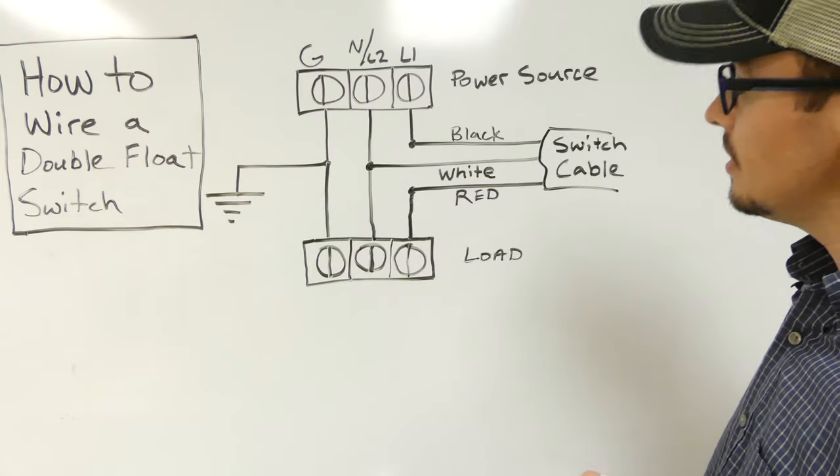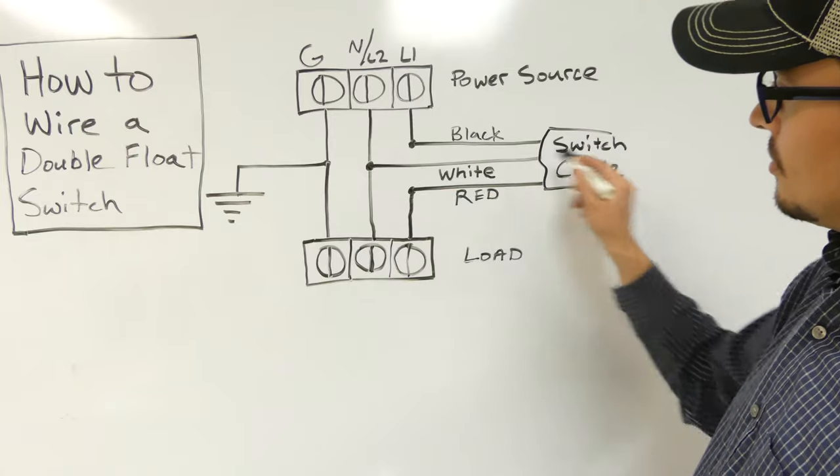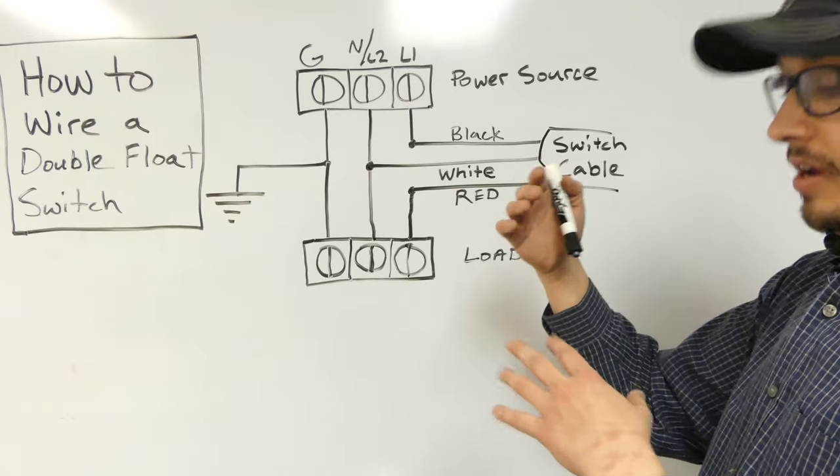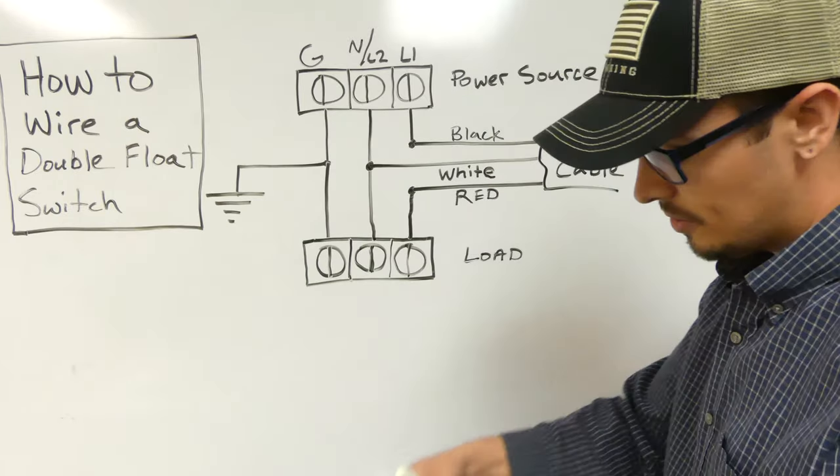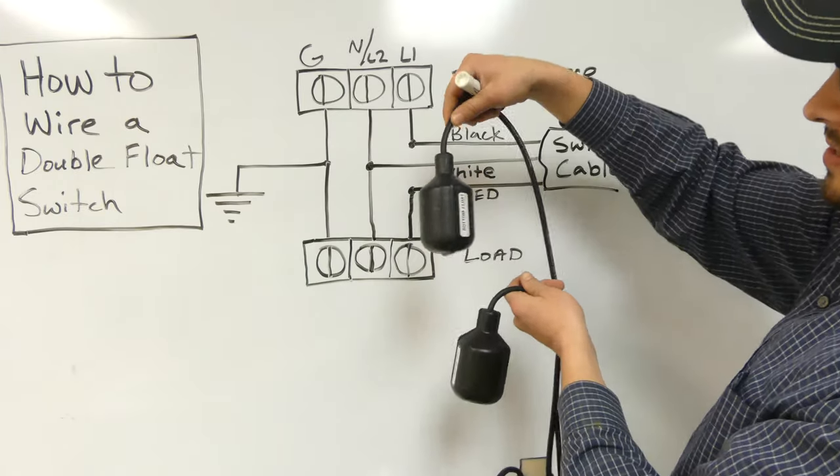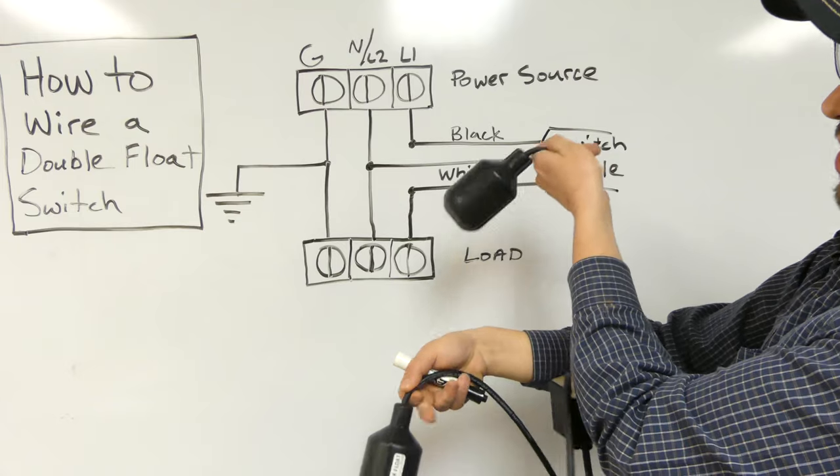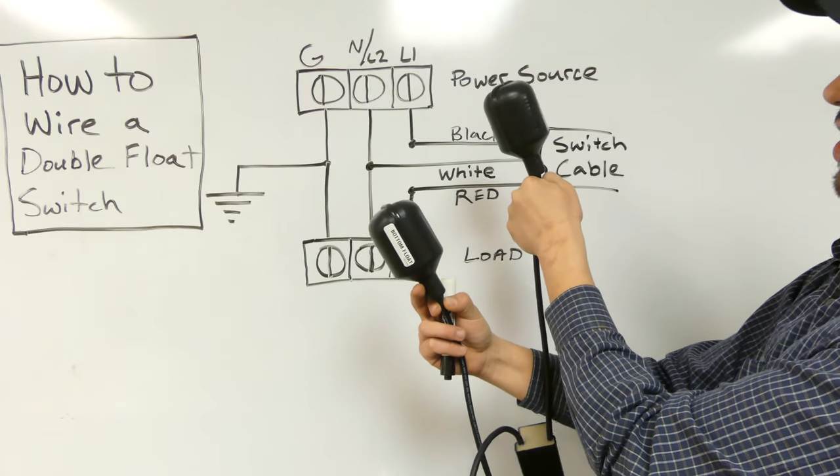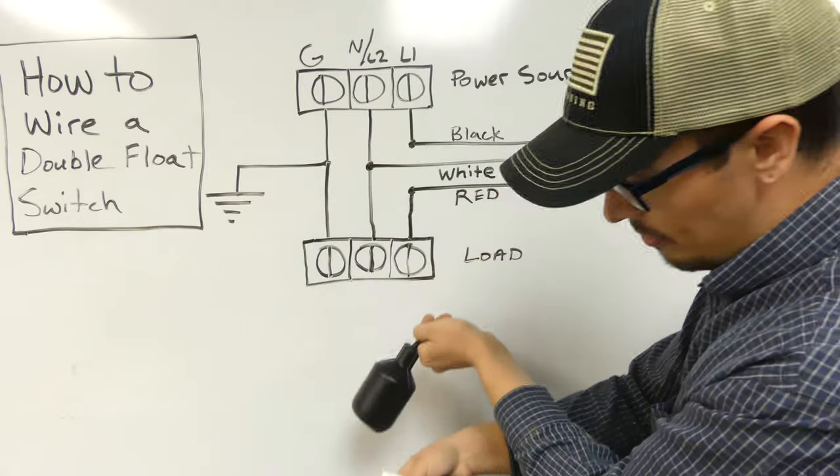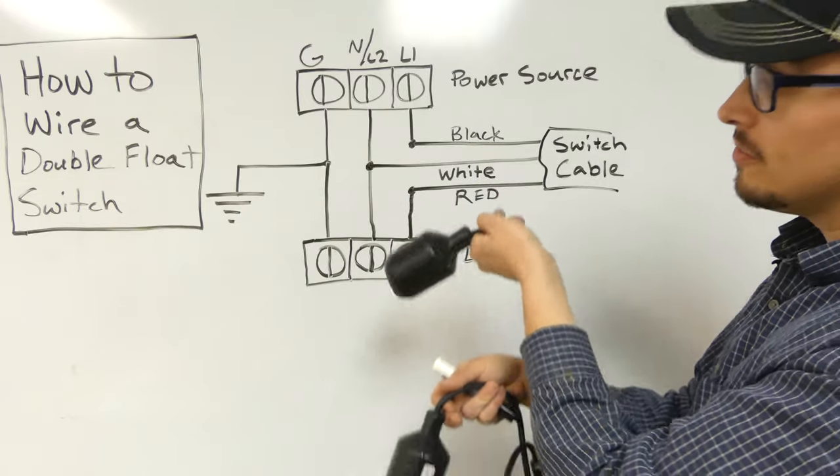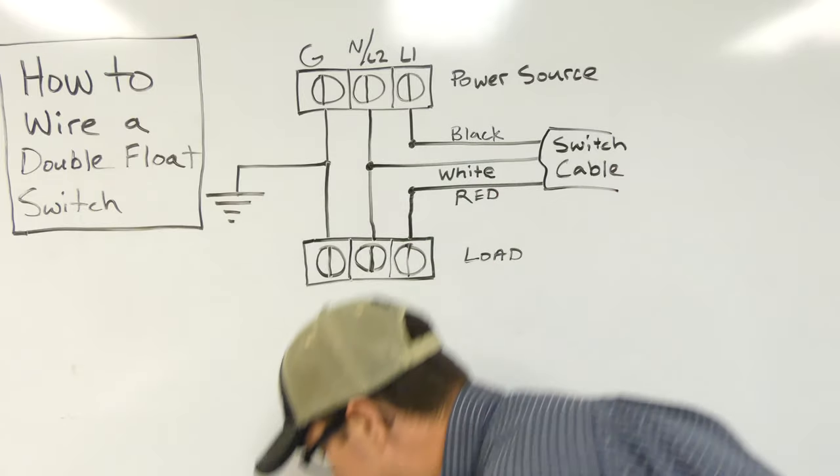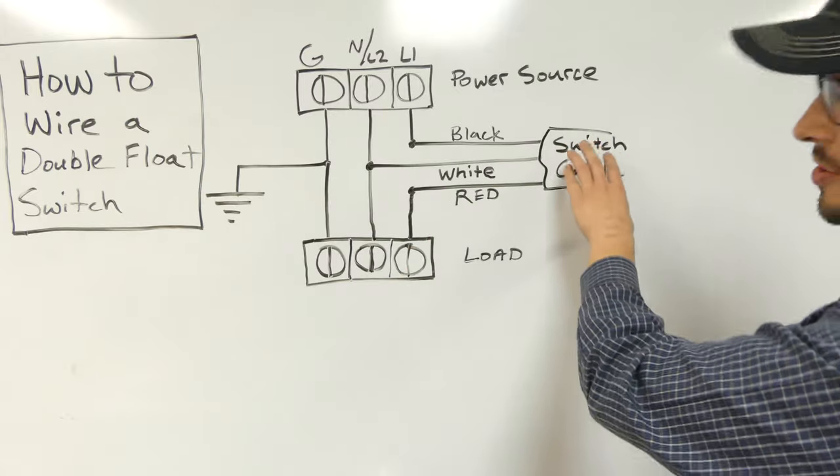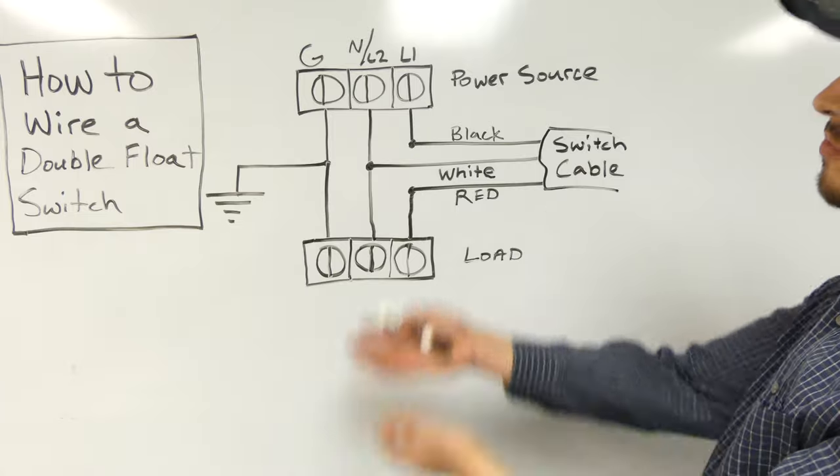So essentially, what we're doing here is with that holding circuit that's created with the relay, we're able to have, let me grab the floats again. So the simple way that this operates, I got them backwards, but it requires both floats to be in the up position for the system to turn on and then both floats to be in the down position for the system to turn off.